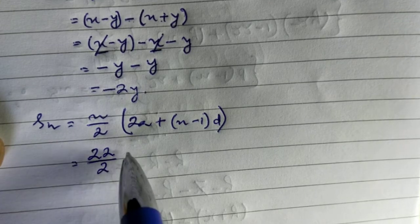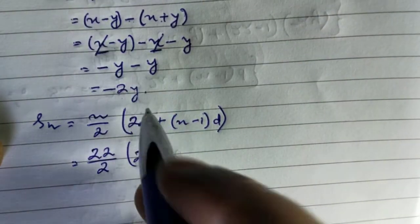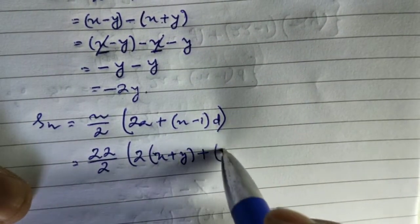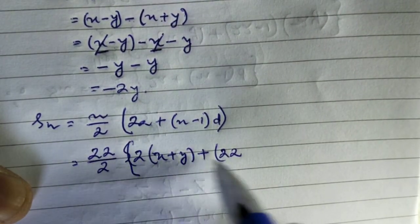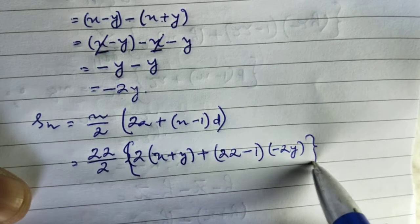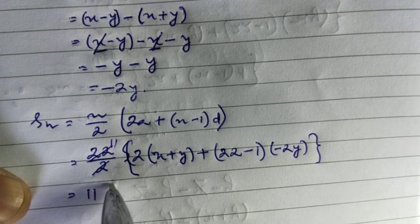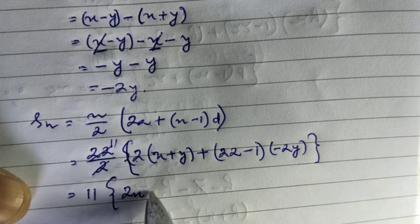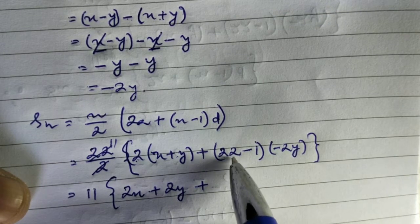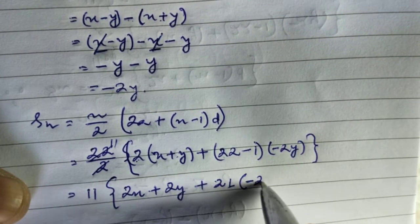Since n is 22, we have 22 over 2, then 2 times a where a is x plus y, plus — with n as 22 again — (22 minus 1) times d which is minus 2y. Cancelling 2 with 22 gives 11. So we have 11 times [2x plus 2y plus (21) times (minus 2y)].